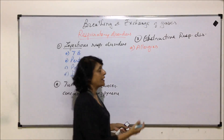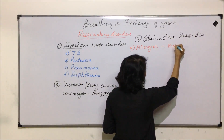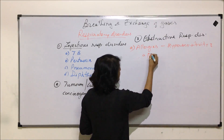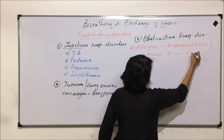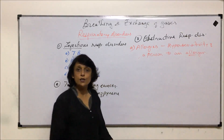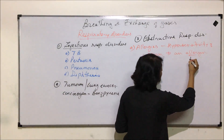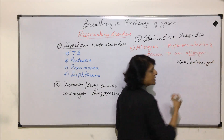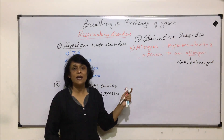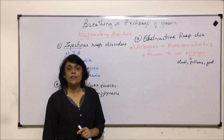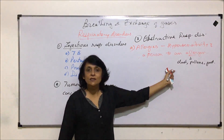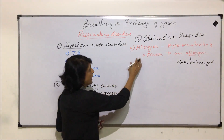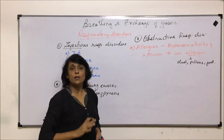Allergies are defined as hypersensitivity of a person to an allergen — the substance that causes allergies. The most common allergens are dust, pollen grains, certain food items such as milk protein, and some chemicals or cosmetics. Dust is the most common allergen. Allergy to pollen grains is specifically known as hay fever.